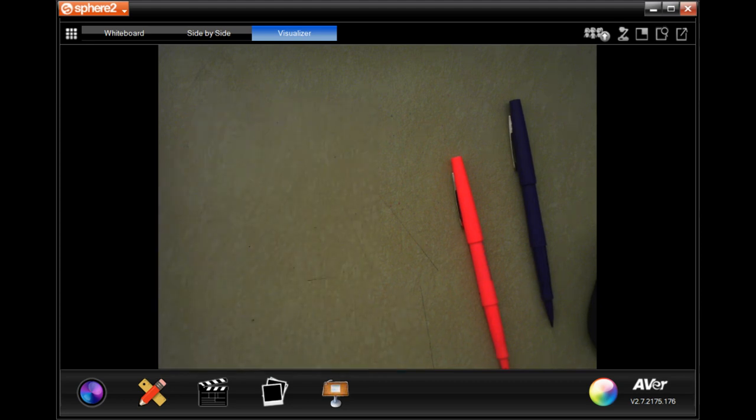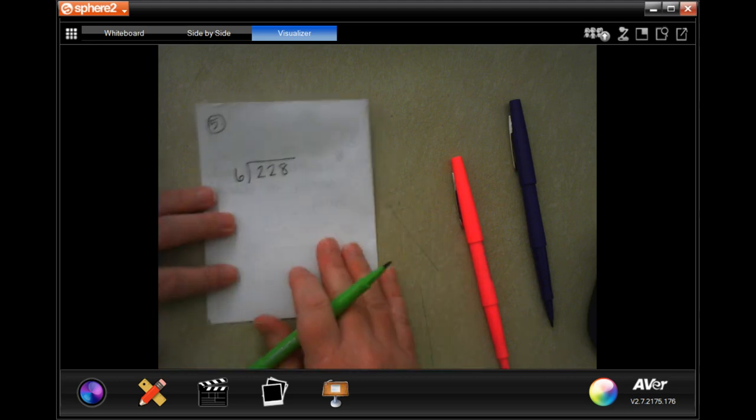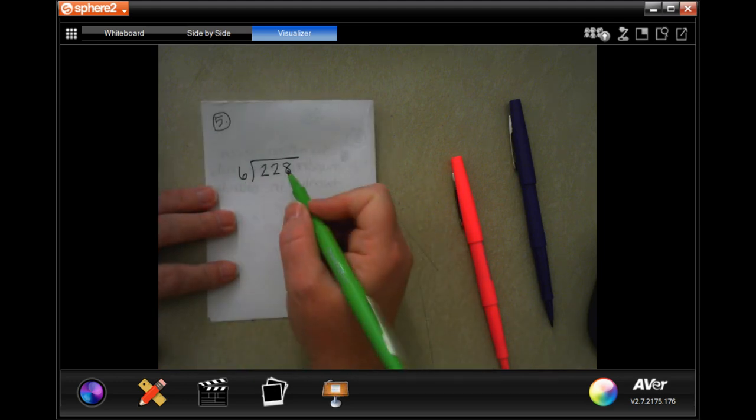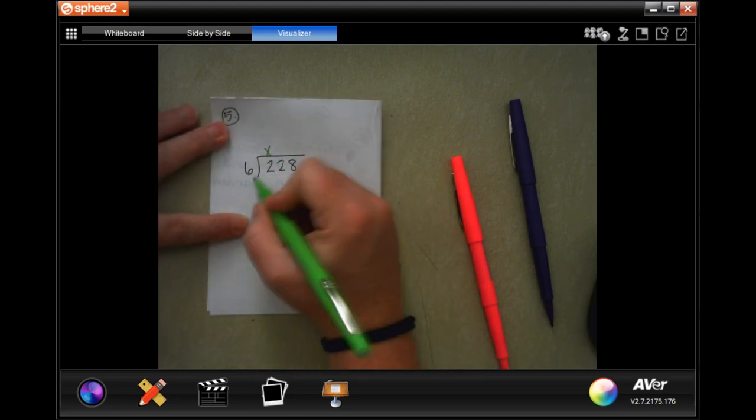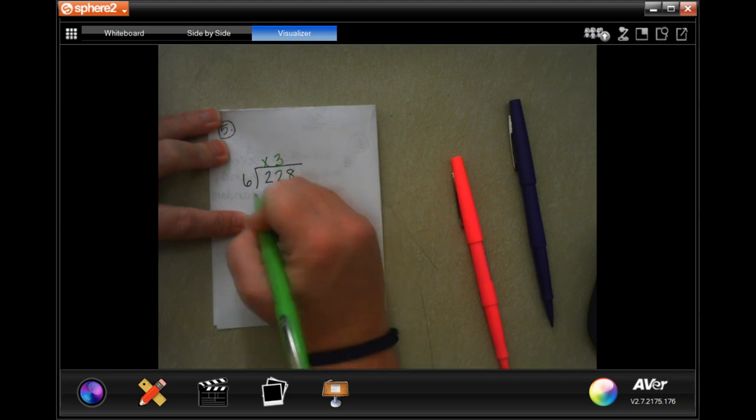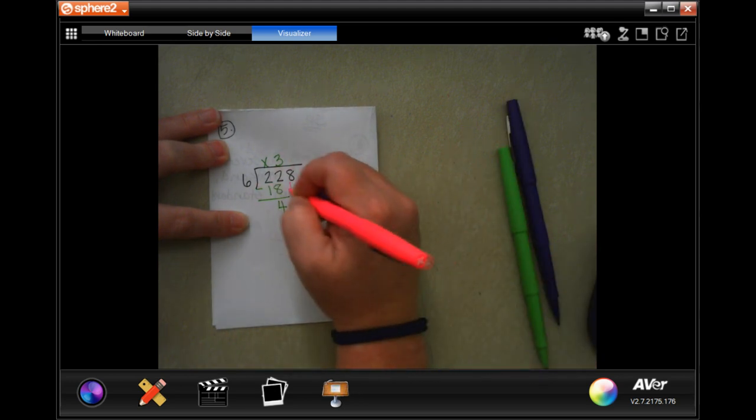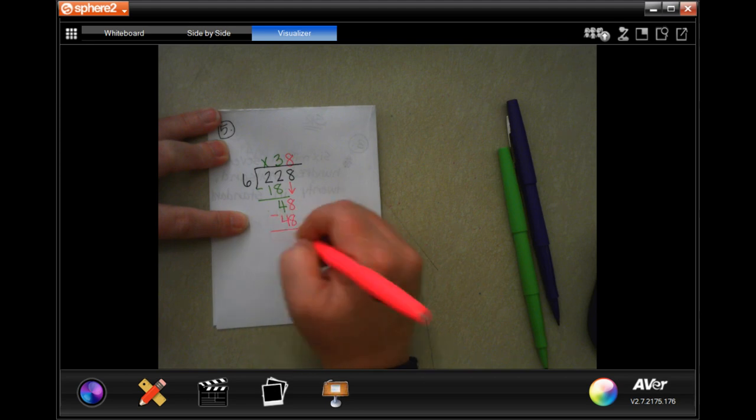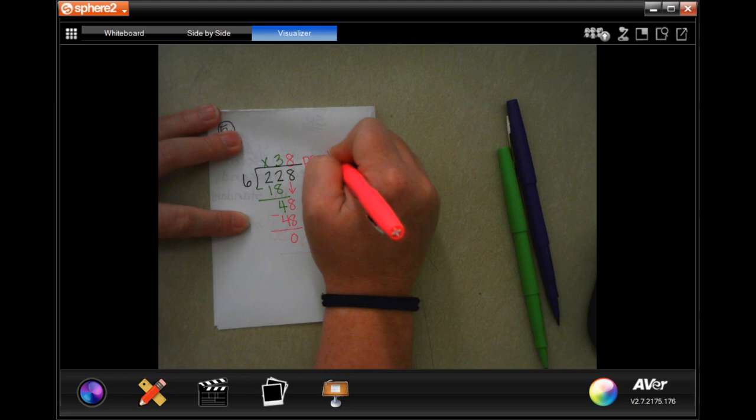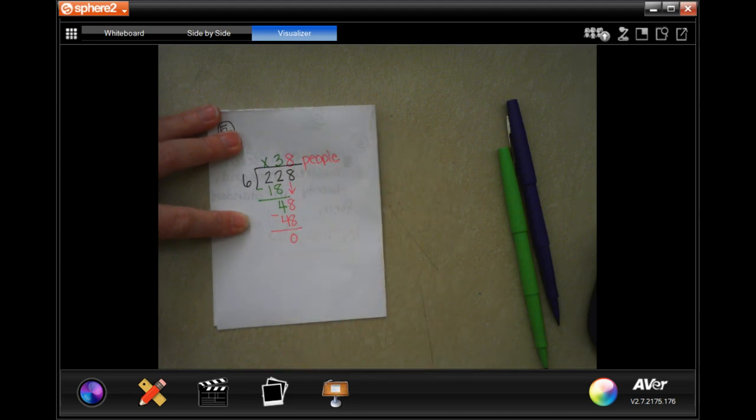We're going to go to number 5, which says, to transport 228 people to an island, the island ferry makes 6 trips. On each trip, the ferry carries the same number of people. How many people does the ferry transport on each trip? So 228 people make 6 trips. Let's find out. 6 is not going to go into 2. 6 will go into 22, 3 times. 3 times 6 is 18. I subtract, I get 4. 4 is smaller than 6, so I can bring down my 8. And I know that 6 times 8 is 48. So 38 people. Word problem, word answer, guys. Make sure we label.